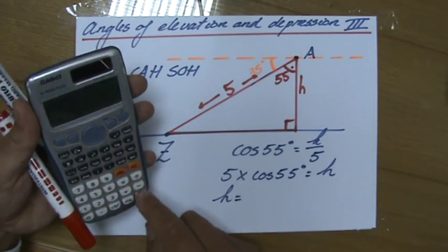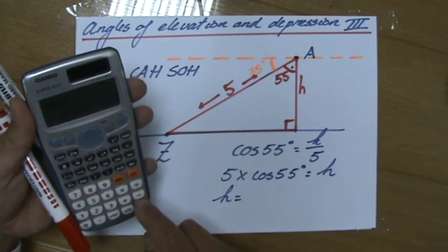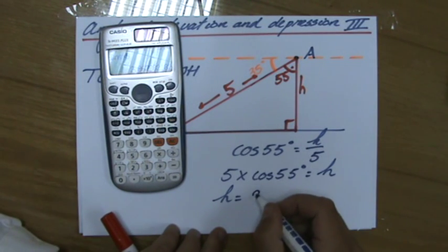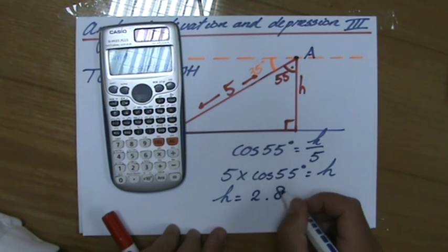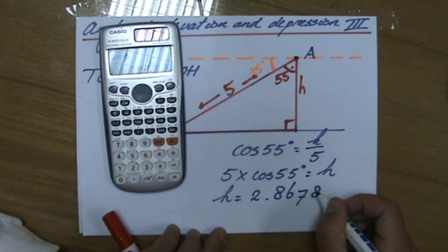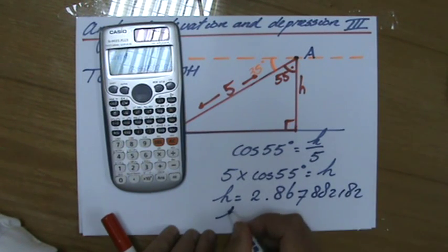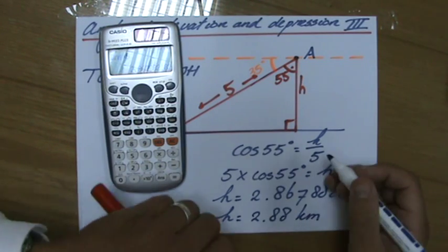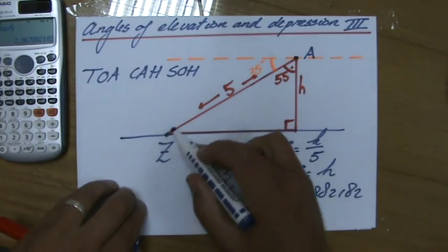Cosine of 55 degrees equals times 5. I've rearranged the formula. And it says 2.867882182, and that correct to three significant figures would be 2.88 kilometers, because this was also 5 kilometers.